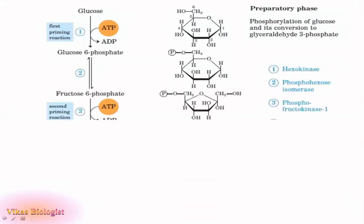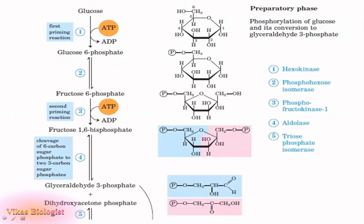This diagram shows the preparatory phase. It begins with glucose. Glucose in presence of hexokinase enzyme, the first priming reaction, converts glucose to glucose 6-phosphate. In this process ATP is converted to ADP and hence it is the first priming reaction where ATP is utilized. Next step, glucose 6-phosphate is converted to fructose 6-phosphate in presence of the enzyme phosphoglucose isomerase. This is an isomerization step.